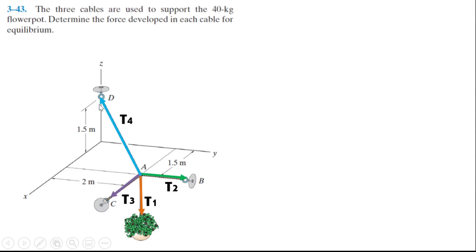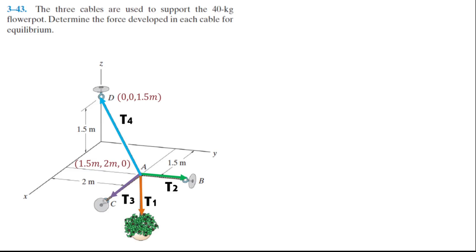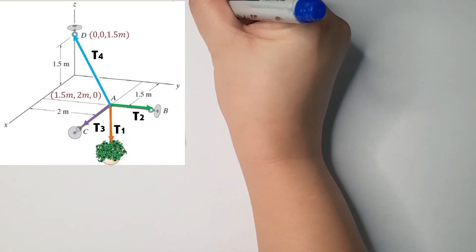We will focus next on T4. No angles are given for T4, only position points. We get the position points of A and B to find the Cartesian vector of T4. Point A is at 1.5 m along x, 2 m along y, and 0 along z. Point B is at 0 m along x, 0 along y, and 1.5 m along z. To solve T4, we cannot use the cosine formula.